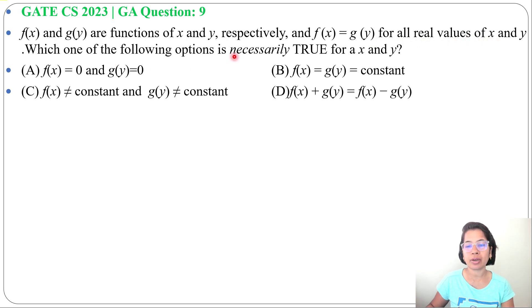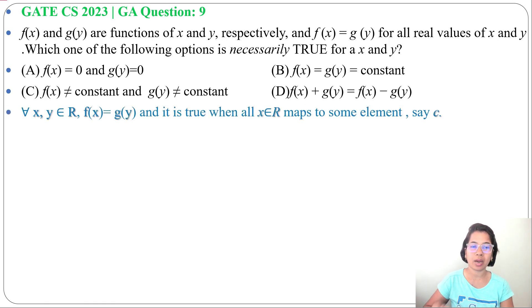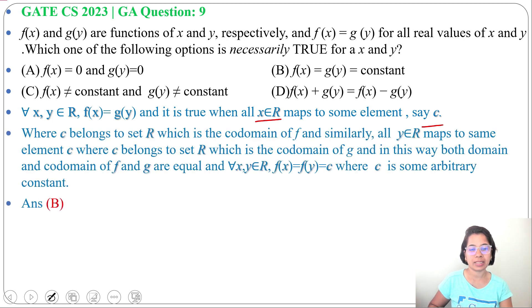Which one of the following option is necessarily true for x and y and four options are given. So for all x and y belongs to R, R means real number, f(x) equals g(y) and it will be true for all x belongs to R maps to some constant say c. At the same time for all y belongs to R maps to the same constant c.